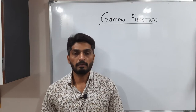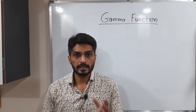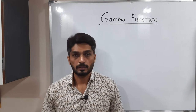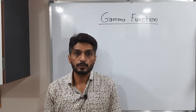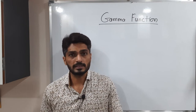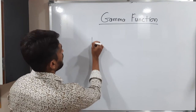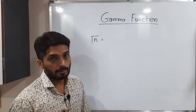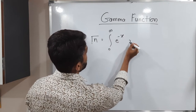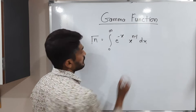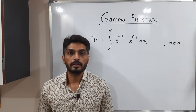Let us discuss what is the gamma function. In previous videos we have already seen what is beta function and few examples and results of beta function. So let us start to discuss gamma function. Gamma function is a particular type of integral, and with the help of this function and its properties we can solve that type of integrals. It has several applications in physics and in engineering. Gamma of n is defined as: integration from 0 to infinity of e raised to minus x, times x raised to n minus 1, dx, where n should be greater than or equal to 0 — any non-negative real number.